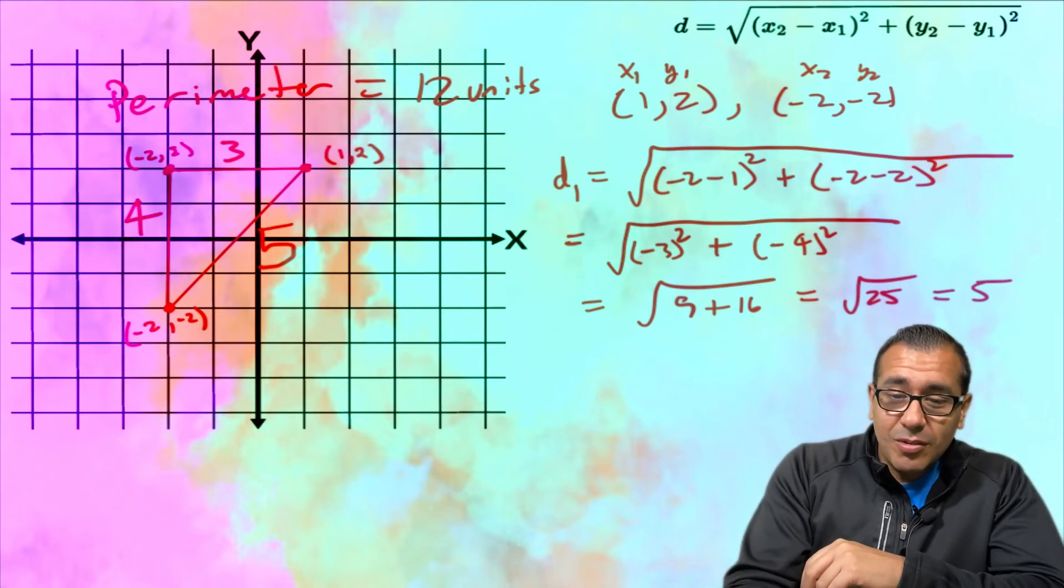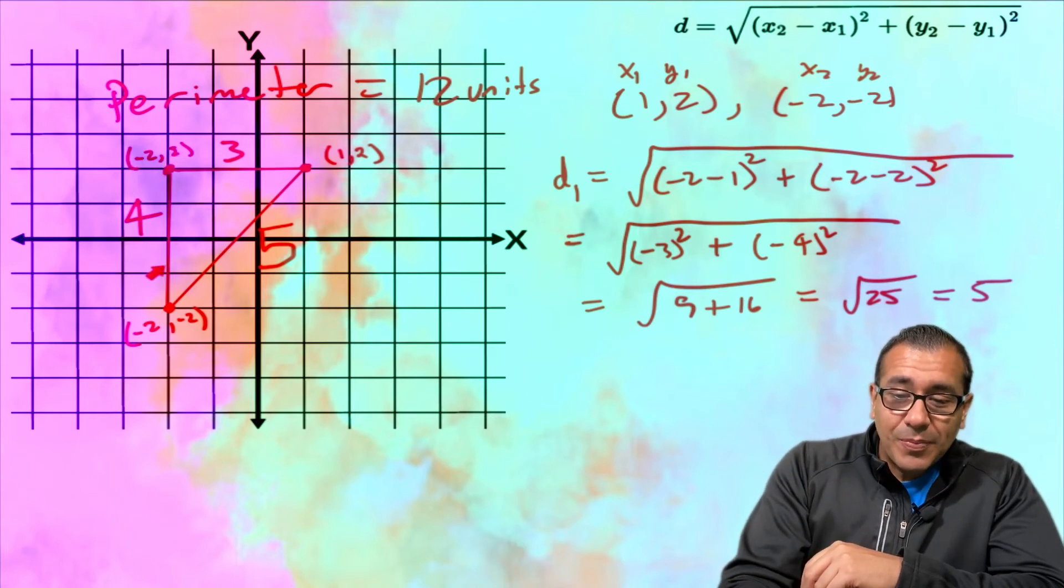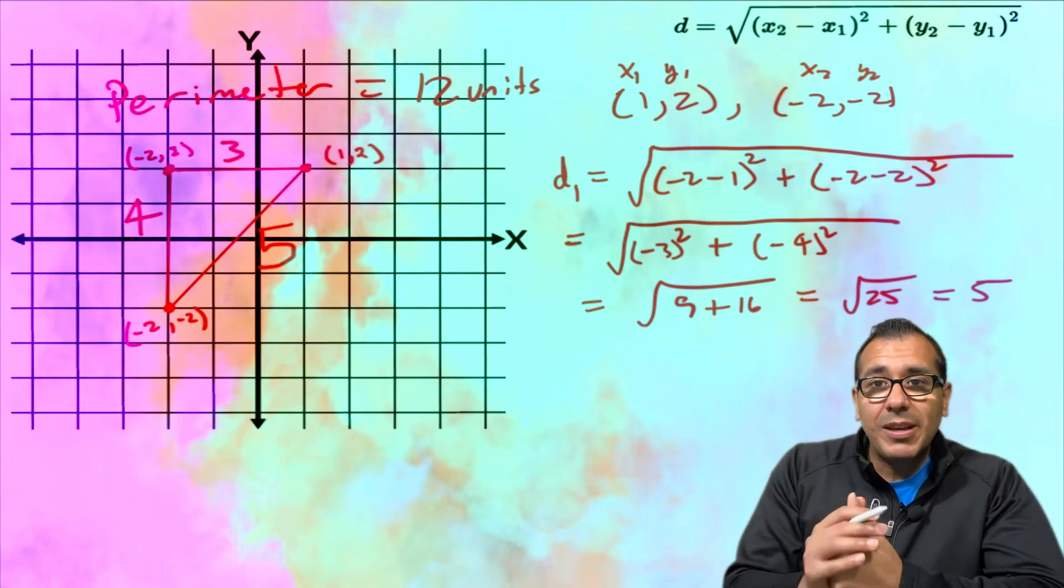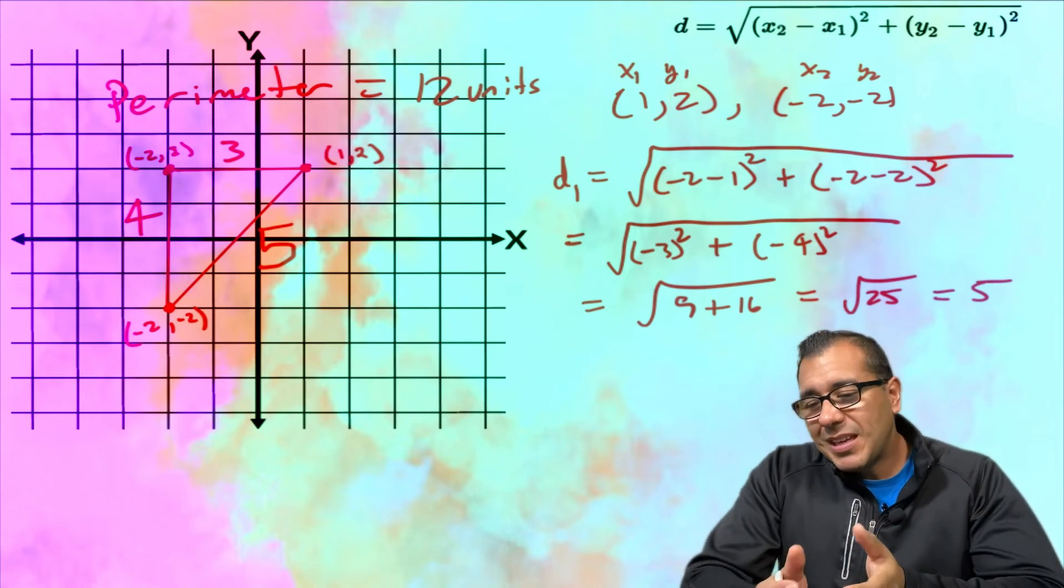And then I would use these two points - (-2,2) and (-2,-2) - and find the distance of this side right here that I might call d3.